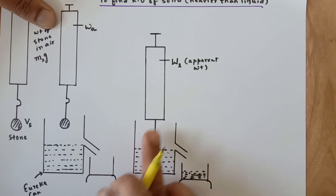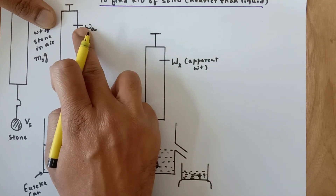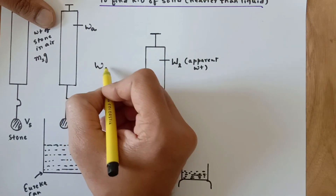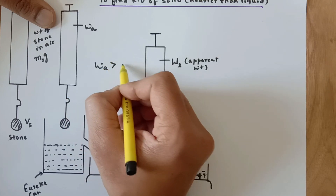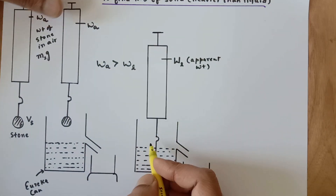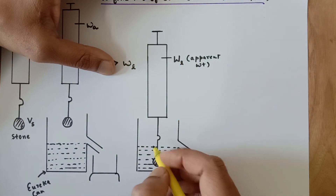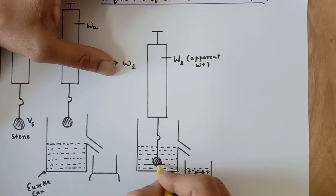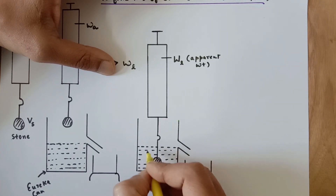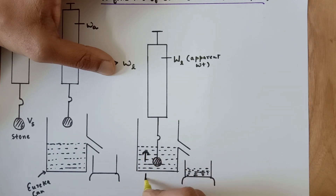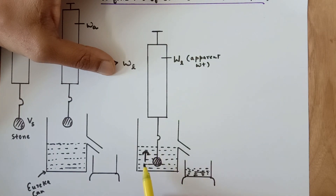Since upthrust is acting on it, this weight will be less than the weight in air — weight in air is larger than weight in liquid. When you immerse it completely, there is an upward force acting on it from the center of buoyancy. This is the upward force FL, which is the upthrust exerted by the surrounding liquid on this stone.